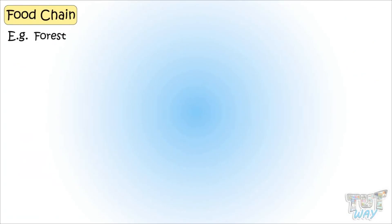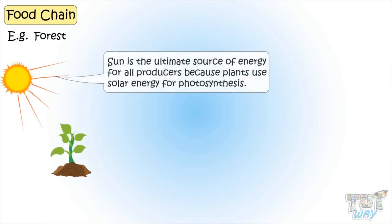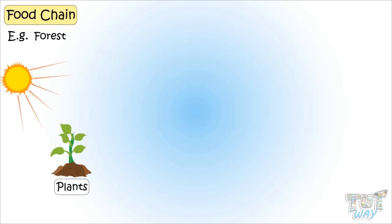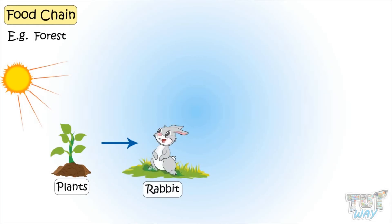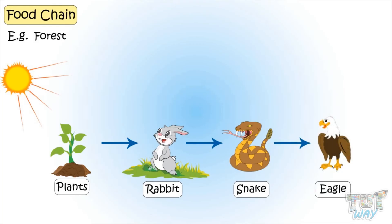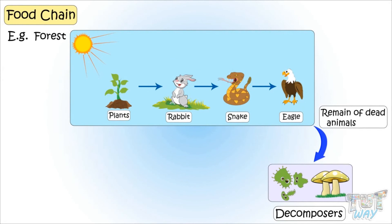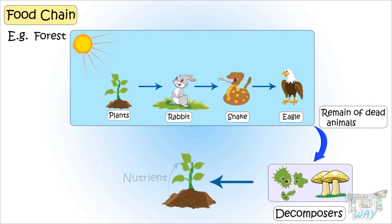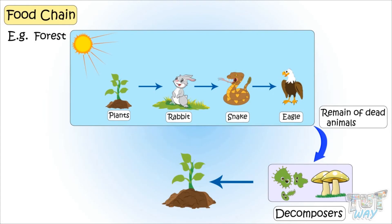Kids, all food chains start from the sun, as the sun is the ultimate source of energy, because plants use solar energy for photosynthesis. So plants produce food, rabbits eat plants, rabbits are eaten by snakes, snakes are eaten by eagles and vultures. All the dead animals are decomposed by decomposers, or the microorganisms, and are again used by plants as nutrients from soil and carbon dioxide from the air, as decomposers also release carbon dioxide into the air when they decompose dead remains.